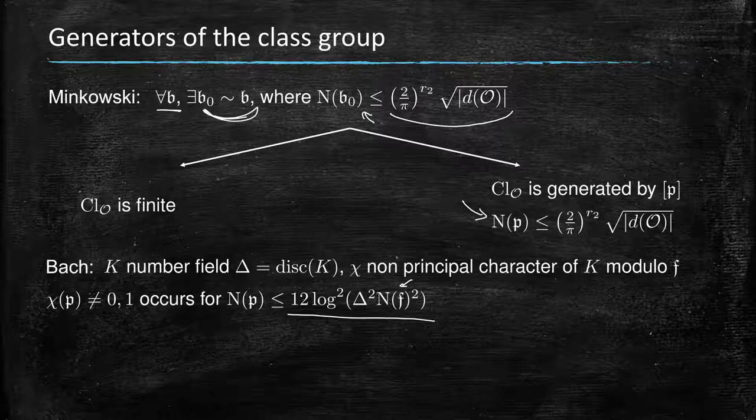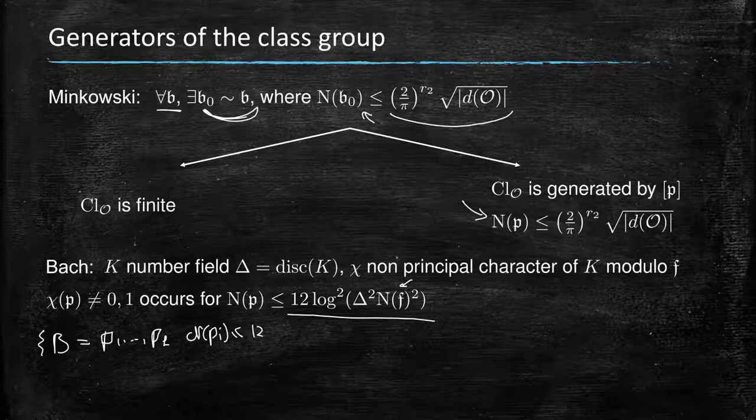Now, how does that relate to the generators of the class group? So let's say you have B, the factor base that is generated by the primes p_1, let's say p_k of norm less than 12 log squared delta squared norm of the conductor.